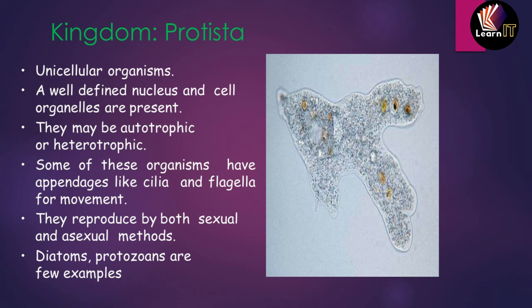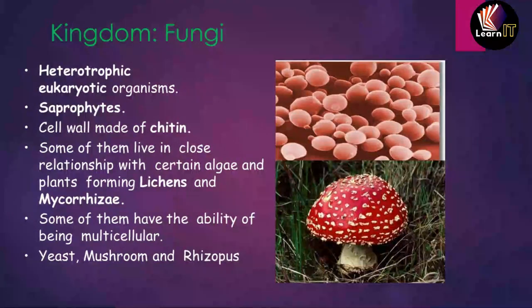In Monera, reproduction only occurs by asexual method, but in Protista, reproduction can be both sexual and asexual. Some examples of Protista are diatoms and protozoans. Now let us move on to the third kingdom, which is known as Fungi.